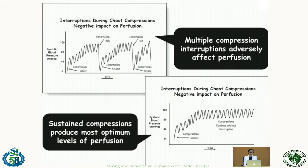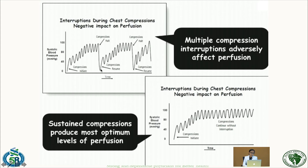Regarding minimal interruptions: when compressions start, cardiac output builds gradually. With continuous compressions, up to 100% of the systolic blood pressure target can be achieved. But if you stop — even for 15 seconds after 30 compressions — you lose that built-up cardiac output and must start over, making ROSC harder to achieve. Continuous compressions sustaining at least 30% cardiac output produce better outcomes.